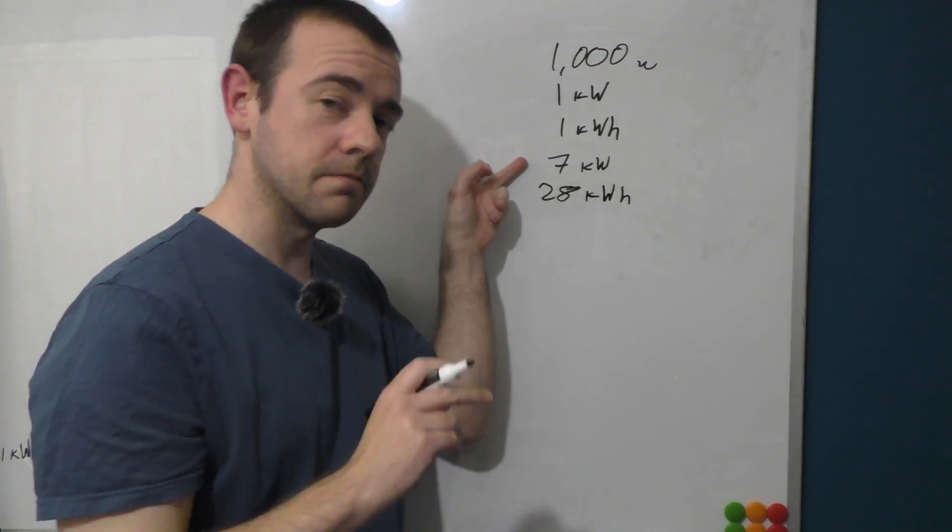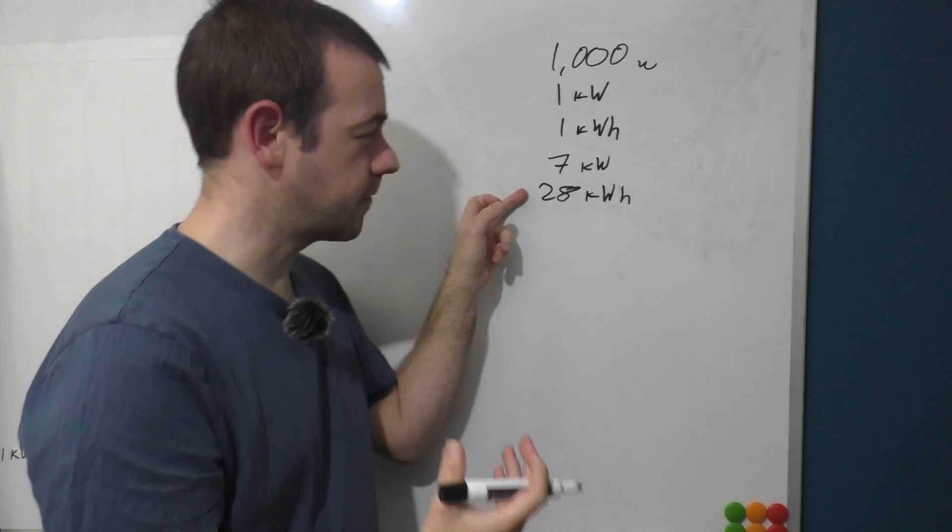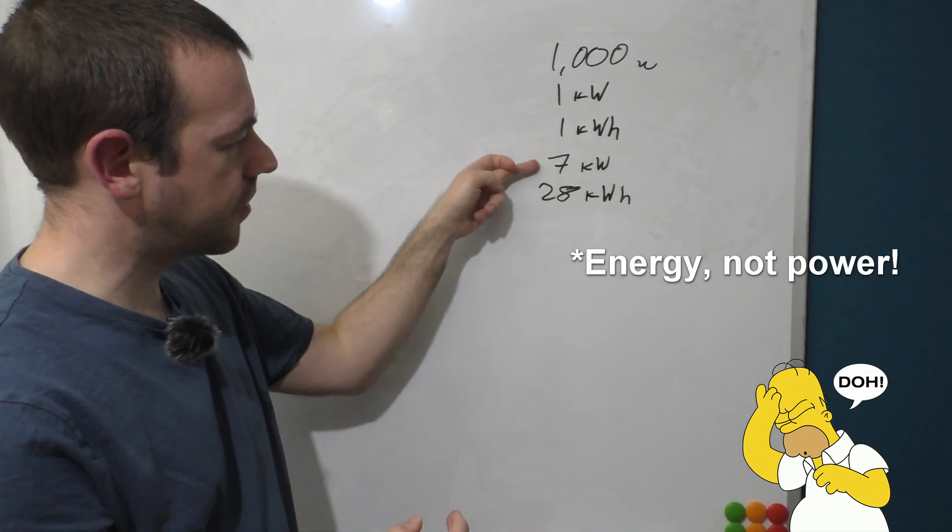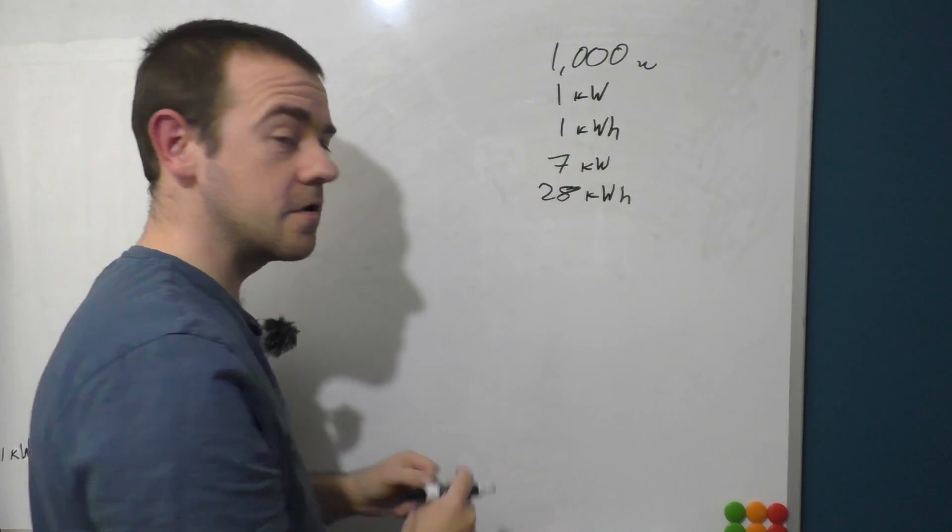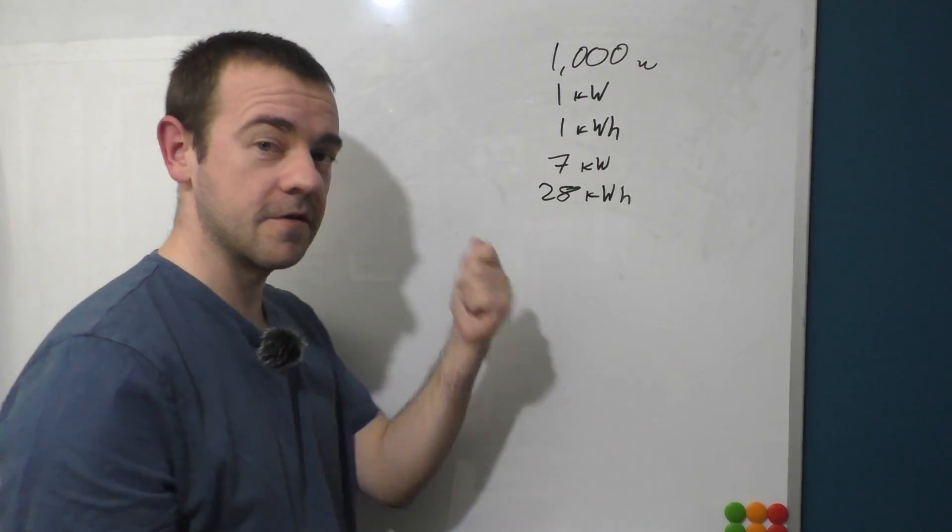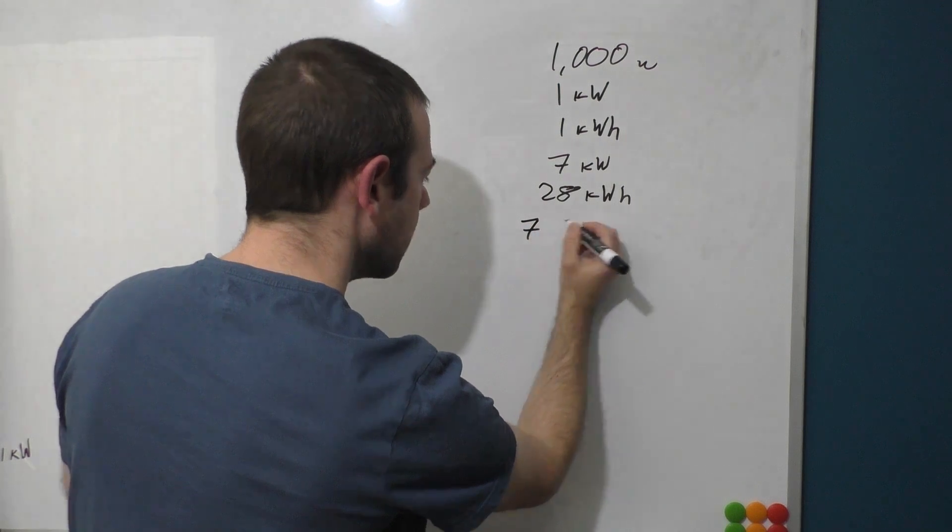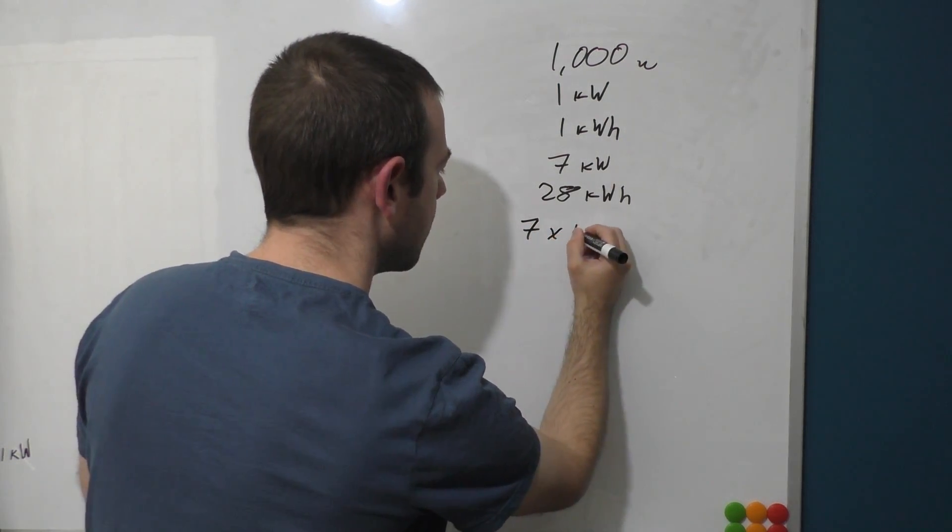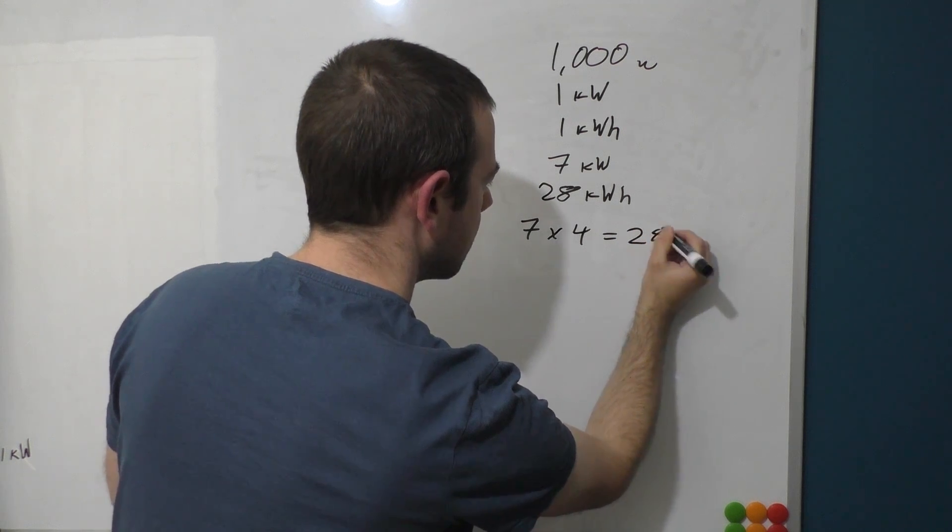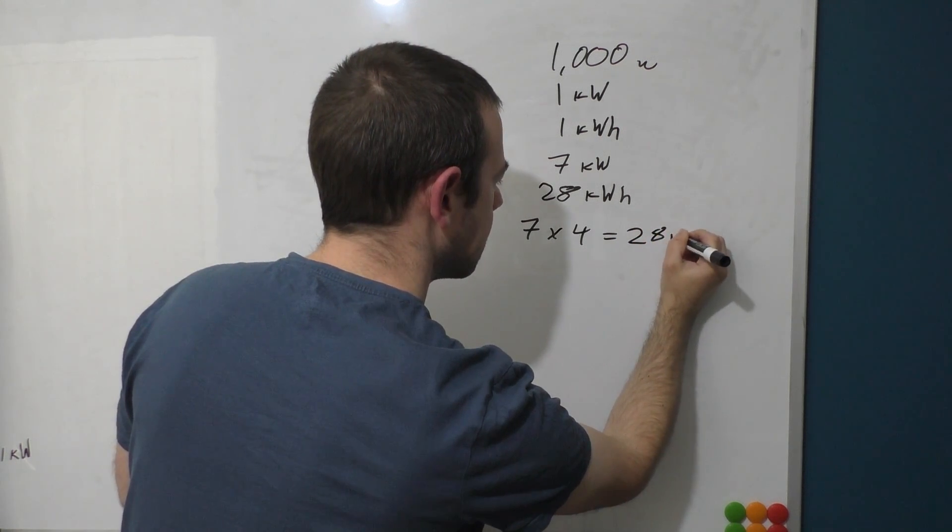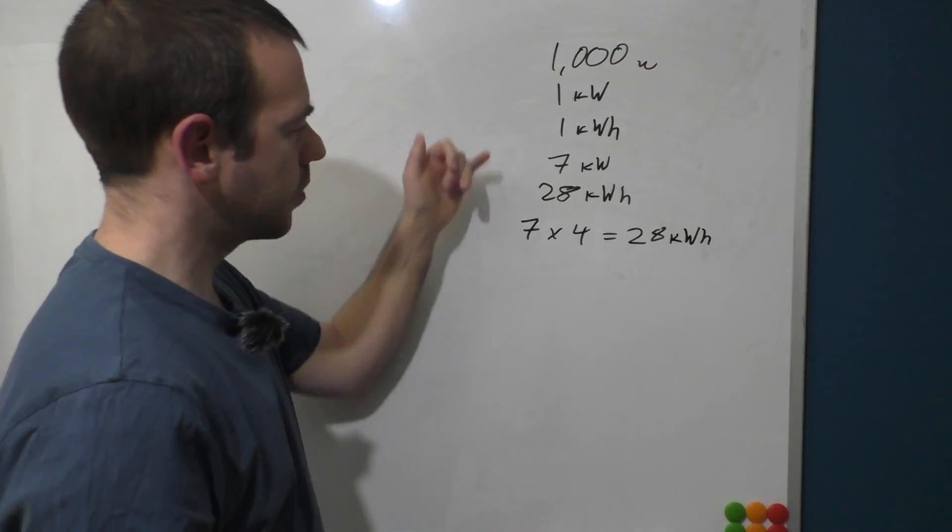So that's how much power the charger can supply, that's how much power the battery can hold. So if I plug that charger into that battery, then 7 times 4 equals 28. There we go. So a seven kilowatt charger running for four hours would give me 28 kilowatt-hours of energy, would basically fill the battery up.